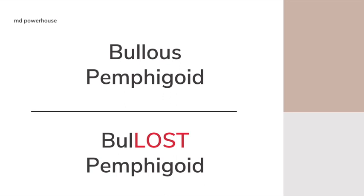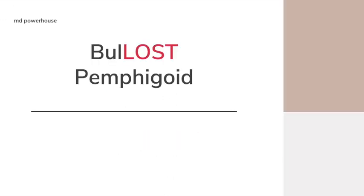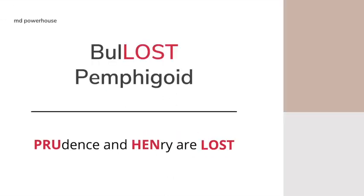Prudence and Henry are lost. So instead of bullous pemphigoid, you're going to say Bollost pemphigoid — Prudence and Henry are lost. Now you're probably thinking: what does this even mean, and how will this help me on exam day?